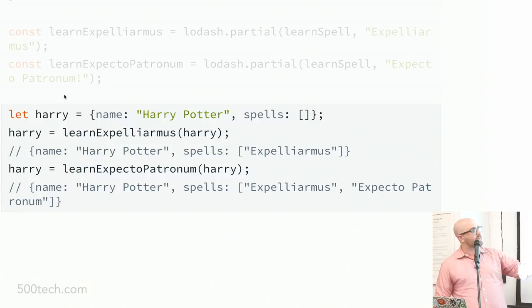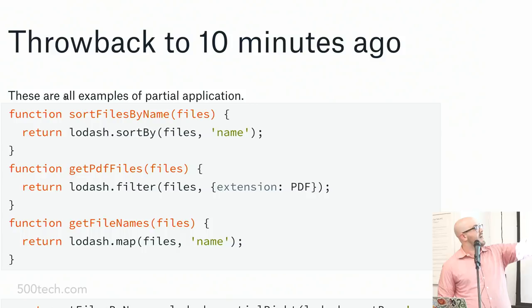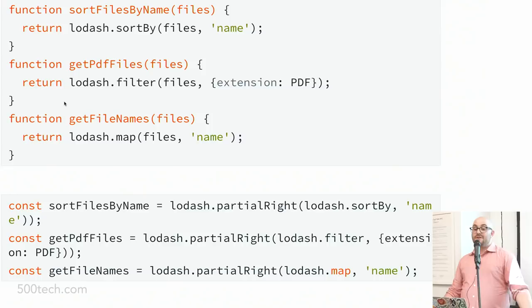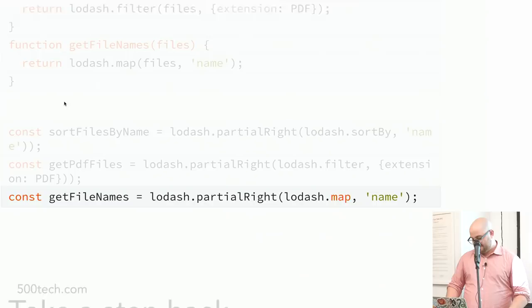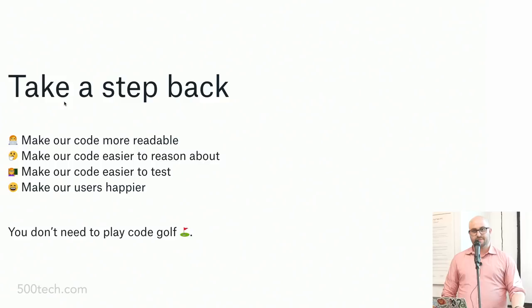Throwback to ten minutes ago — those sort file functions I generated before are all partial applications: taking a list of files and a Lodash function and binding one parameter. You could theoretically collapse them into fewer lines of code, but it's less readable to the average developer. If you're on a team of three who all know this stuff, go for it. If you're on a team of 50, maybe don't bother teaching this to everyone. We are optimizing for happiness — not playing code golf, not trying to reduce lines of code, not trying to sound smart. We're just optimizing for user and developer happiness.